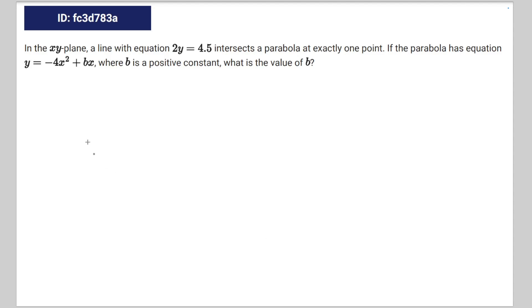So we're given the following math question. In the xy plane, a line with equation 2y equals 4.5 intersects a parabola at exactly one point. If the parabola has equation y equals negative 4x squared plus bx, where b is a positive constant, what is the value of b?